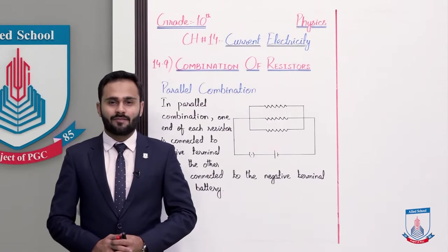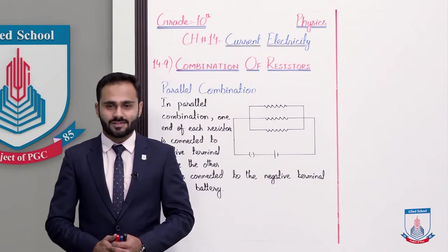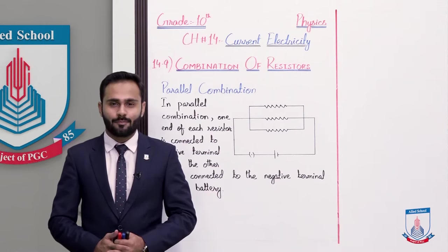So chapter number 14, current electricity, and the topic 14.9, combinations of resistors. Aaj hum discuss karenge parallel combination.